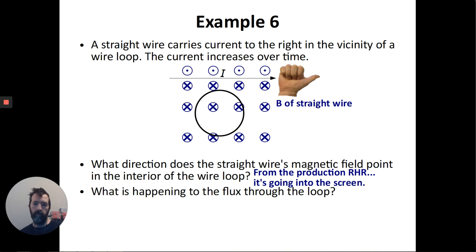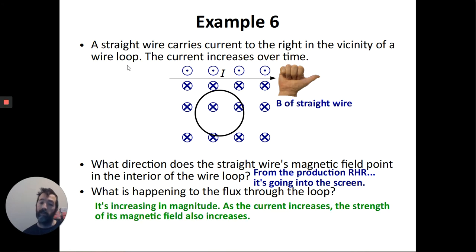So I'm going to draw that in. You can also see a nice image of my hand there. So the flux through the loop goes into the screen in this case. And then the question also says the current increases over time. That means that the magnetic field produced by the current will also be increasing. And so the magnitude of this flux has to increase. So it goes into the screen and it's increasing.